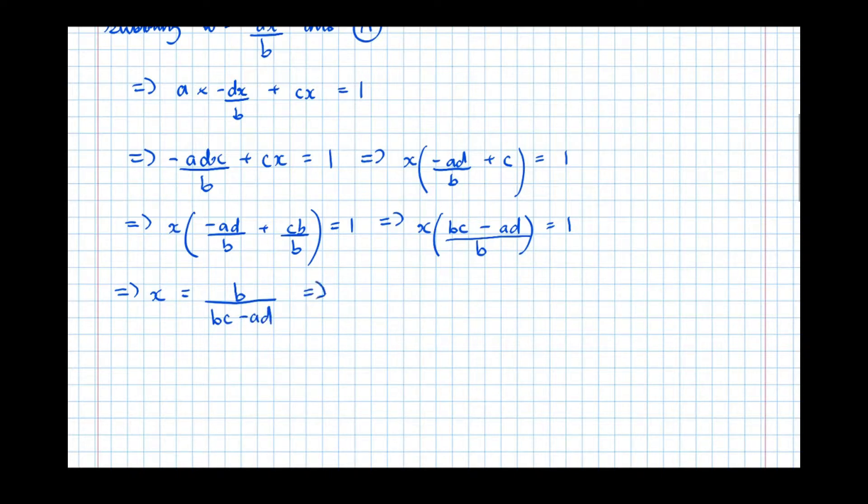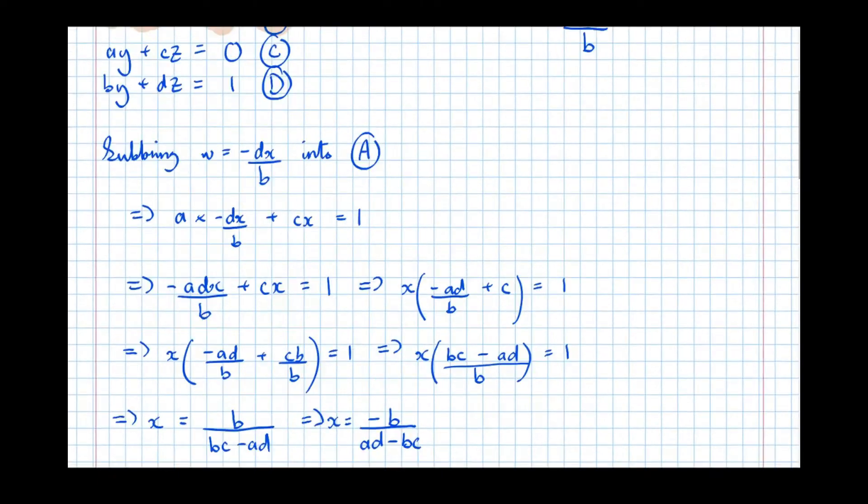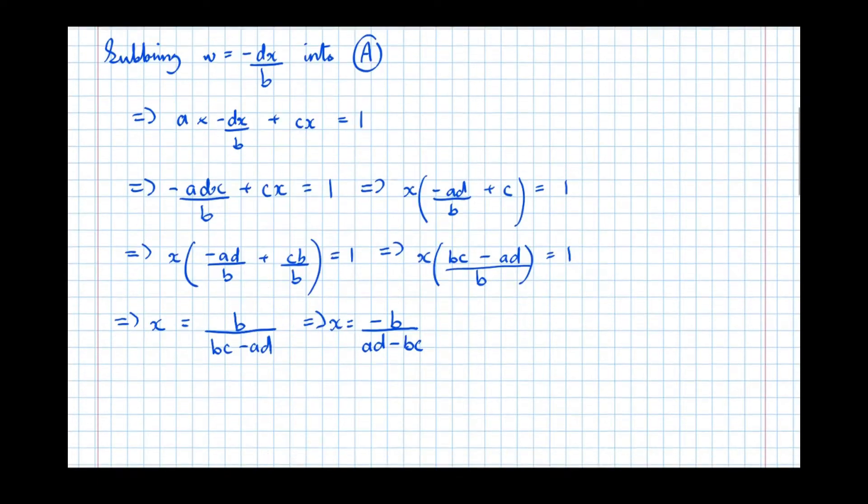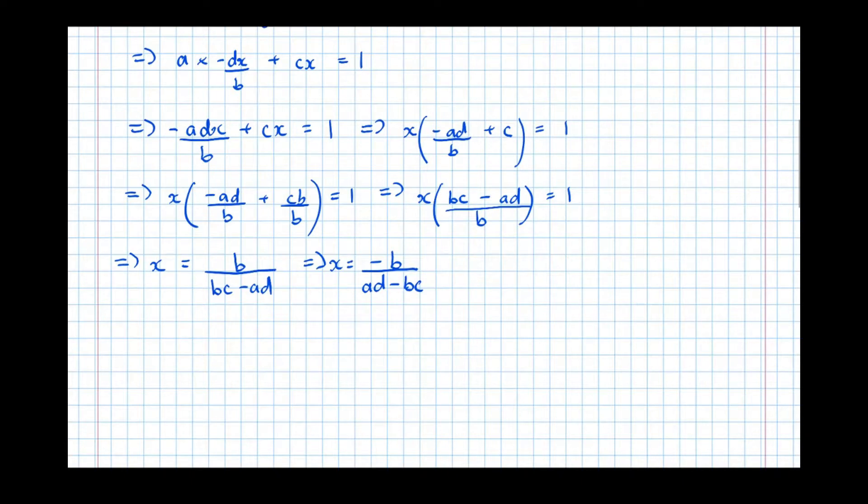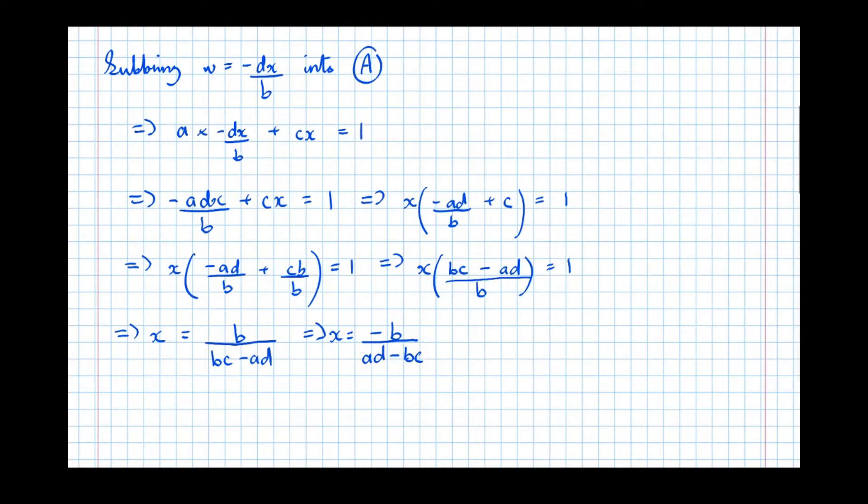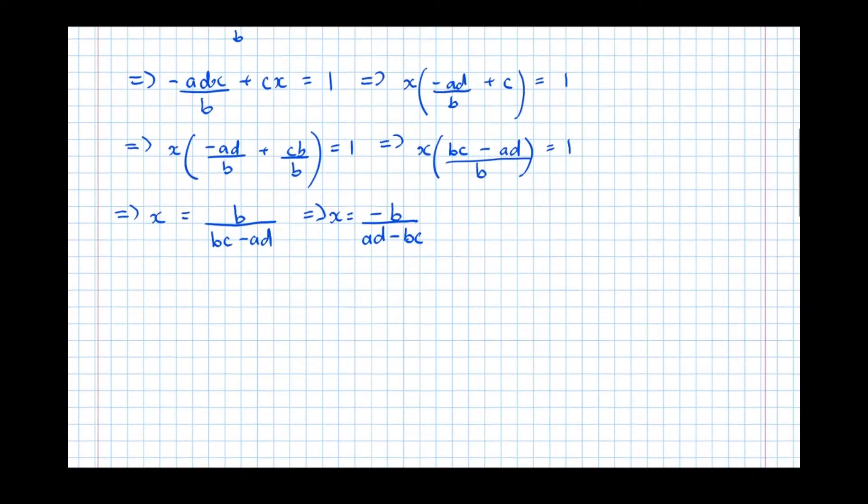And this in turn means that X equals, so if I multiply by B, I get B on the right-hand side and divide by BC minus AD. And for reasons which will become clear later, I'm going to actually rewrite this in an equivalent form times both the top and bottom by minus 1 to get an equivalent expression. So we're going to leave that there for now, X is minus B over AD minus BC. So what we're going to do now, we're going to sub that into our other equation. So we start with equation B there, let's sub that in there to find out what W is.